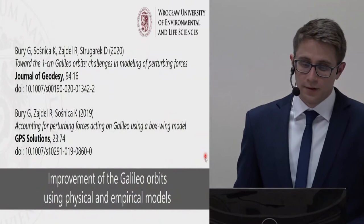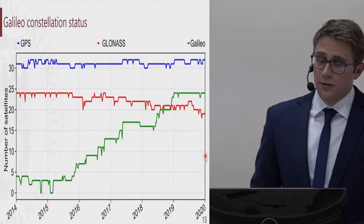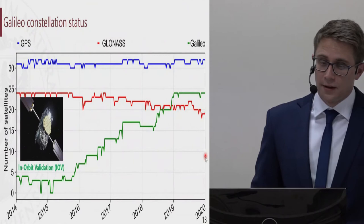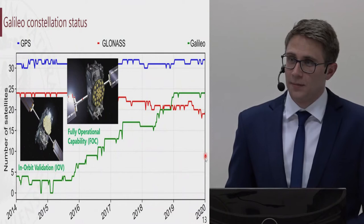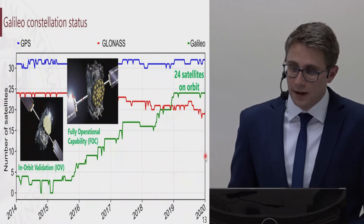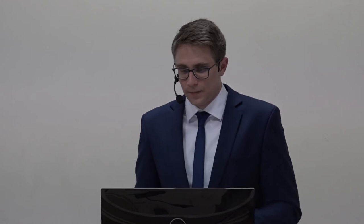The first part of the results concentrates on the improvement of the Galileo orbits using physical and empirical models. These results have been published in the Journal of Geodesy and in GPS Solutions. The Galileo constellation has been developed since the beginning of the 21st century. After a successful in-orbit validation stage, a fully operational capability phase has begun. After a series of launches of the FOC satellites, we now have 24 operational satellites on orbit. It was late 2017 when ESA released the Galileo satellite metadata, which contains both optical and geometrical properties of the Galileo satellites.